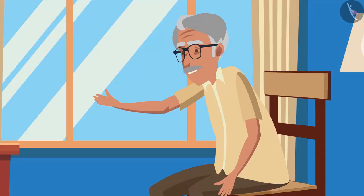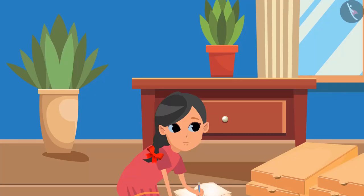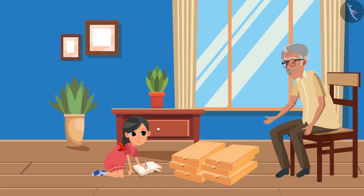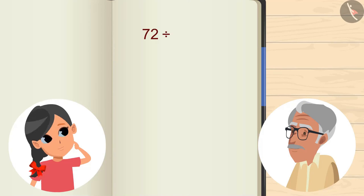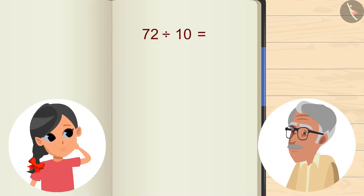Oh! What happened, grandpa? We have to send mangoes to 10 places and only six boxes are made according to 12. Grandpa, don't we have small boxes? Yes, we have! It's a great idea. If 10 boxes were to be made, then how many mangoes will be there in each box? For this we will divide 72 by 10. You can pause the video and try to calculate the answer.